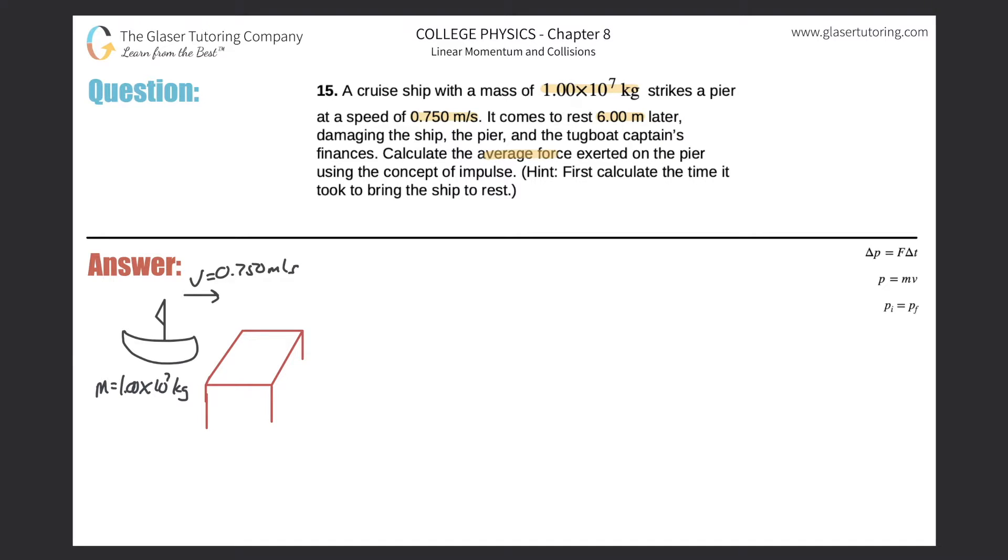Calculate the average force exerted on the pier using the concept of impulse. All right. Here we have our cruise ship that has a sail on it for whatever reason, and it's going to hit the table, which we'll pretend is a pier. After this boat hits the pier, the pier is essentially going to be compressed. The pier is going to be compressed by six meters.